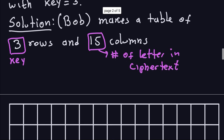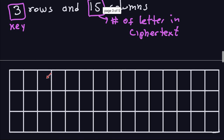Alright, so I already made a table here with 3 rows and 15 columns. He knows this because he knows the key and the length of the cipher text. Now, what Bob has to know to decrypt the message is how the process of encryption worked. Because this is a Rail Fence cipher, a zigzag cipher, the way the plain text is written down is in a zigzag way. So what Bob has to do is determine what positions the plain text will occupy in this table.